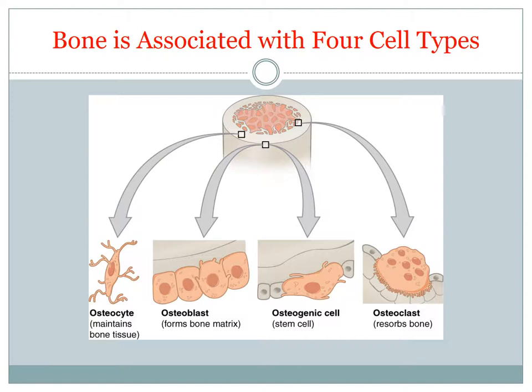Osteogenic cells are mesenchymal cells located in the periosteum and endosteum. These stem cells divide to produce daughter cells that differentiate into osteoblasts, and they are important in the formation of osteocytes. Osteoclasts are bone-digesting cells that remove and recycle the bone matrix. These are giant cells with 50 or more nuclei. Osteoclasts are not related to osteogenic cells or their descendants. Instead, they are derived from the same stem cells that produce phagocytic white blood cells called monocytes. Acids and proteolytic enzymes secreted by osteoclasts dissolve the matrix and release stored minerals. This process is called osteolysis or resorption and is important in bone remodeling.